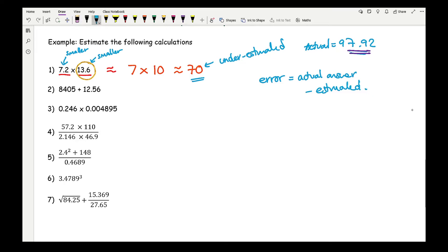Now moving on to question 2, here we've got 8405 plus 12.56, so identifying the first sig fig—that's going to be thousands, so this number to the nearest thousand is 8000, and the first sig fig is 1, which represents 10, so this number to the nearest 10 is going to be 10. So the estimated answer for this one is going to be 8010.